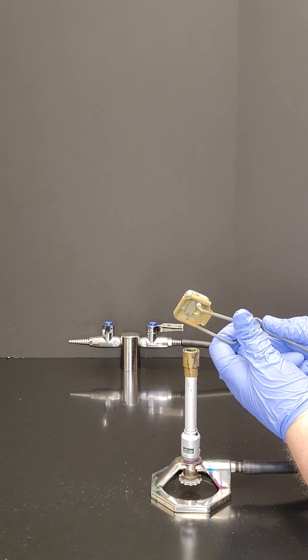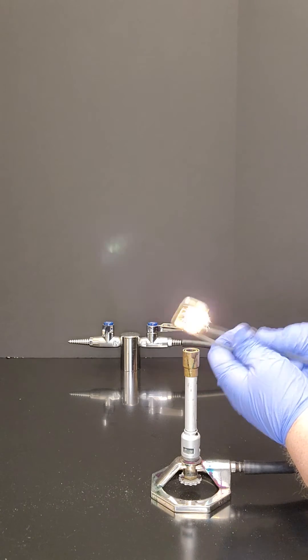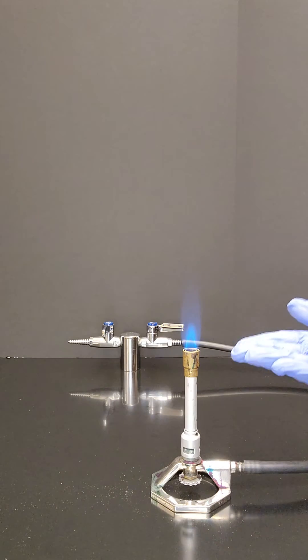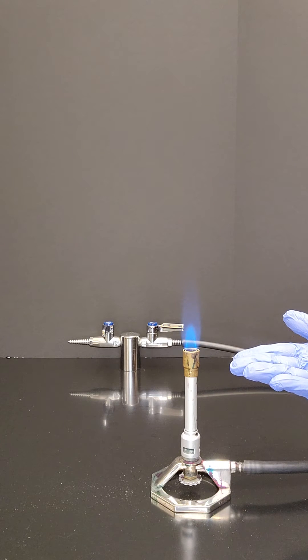Give the flint some good downward pressure and this is the kind of flame you should see when you light your burner.